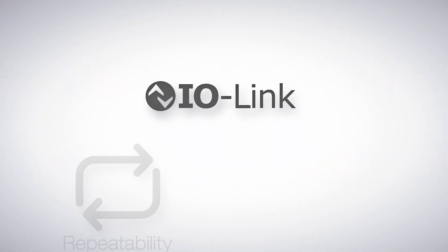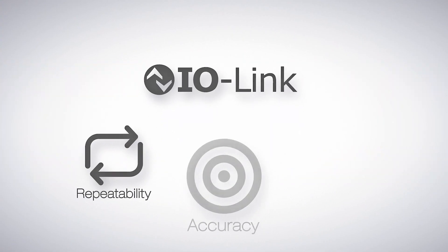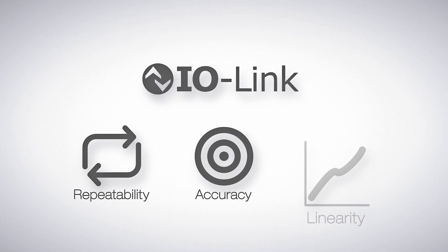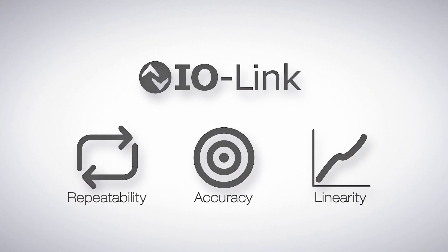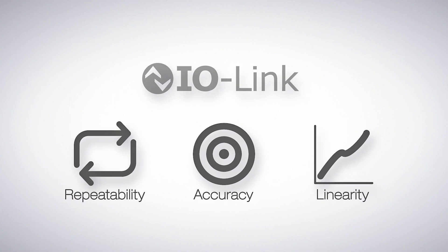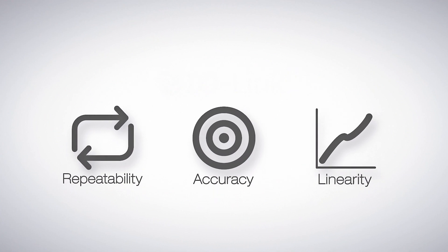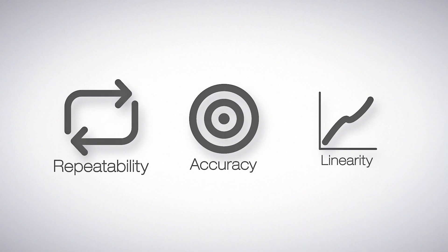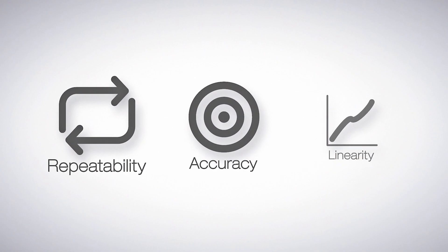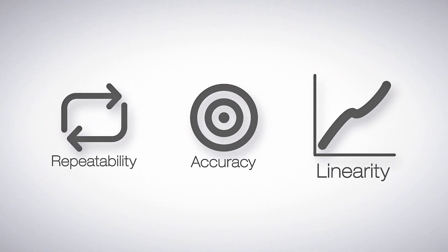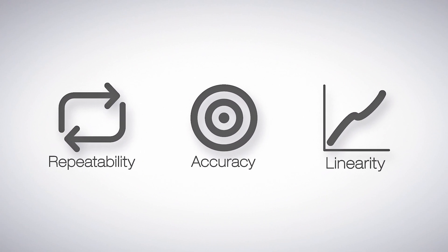In IO-Link applications, repeatability, accuracy, and linearity are all specifications used to describe sensors. But not all specifications are equal indicators of real-world performance. Let's break it down.